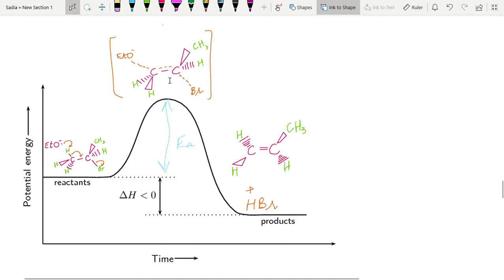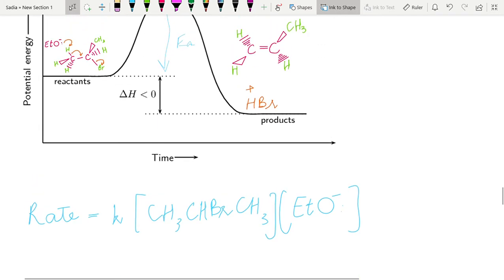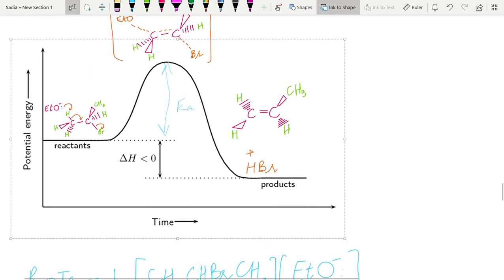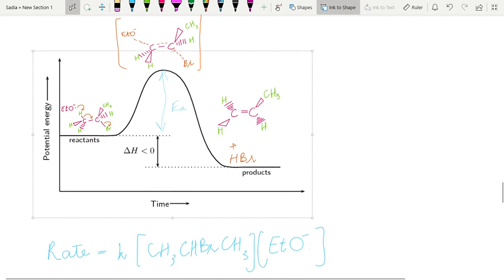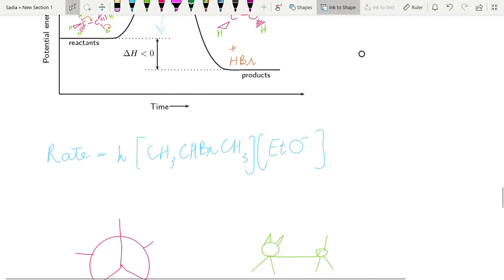It means that in this reaction, the rate will depend on these two things: number one, this compound, and number two, the substrate that is reacting with it. So the rate of reaction will require all these two things. All these two things are given in the rate equation. Therefore, this reaction is known as E2 or bimolecular reaction, in which both molecules are taking place.